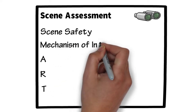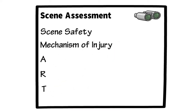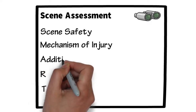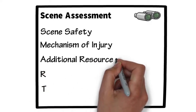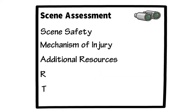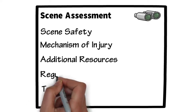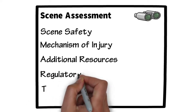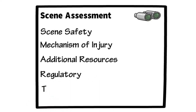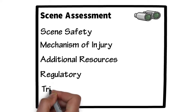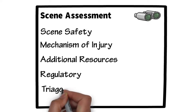For mechanism of injury, we need to include C-spine and catastrophic haemorrhage. You'll also need to look at additional resources, so at this point you should request help in whatever form you deem necessary. Regulatory includes any DNARs, advanced directives, or recognition of life extinct situations that may be present, and triage — is this your only patient?